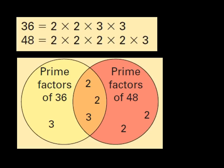Let's look at an example. In this case, the person has already found the prime factors of the numbers 36 and 48. For 36, the prime factors are 2 × 2 × 3 × 3. The prime factors of 48 are 2 × 2 × 2 × 2 × 3. We definitely have some common numbers, but how should we place them in the Venn diagram?